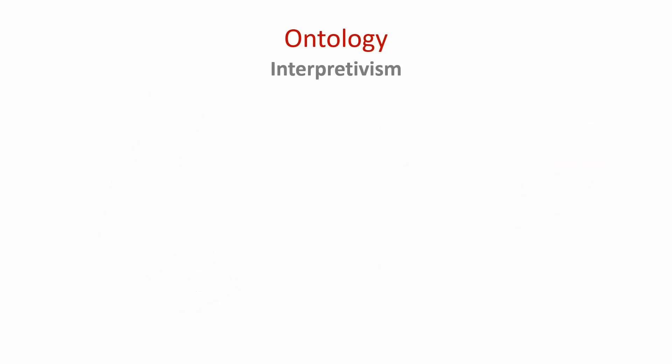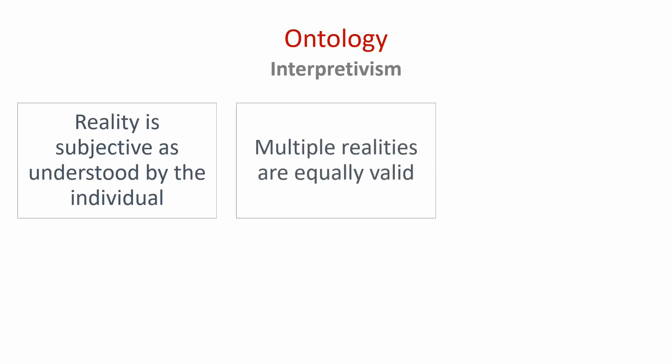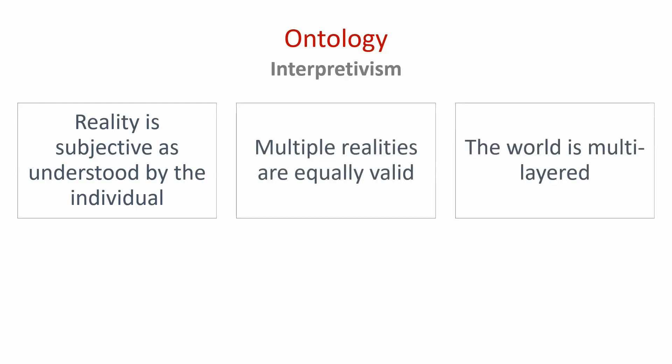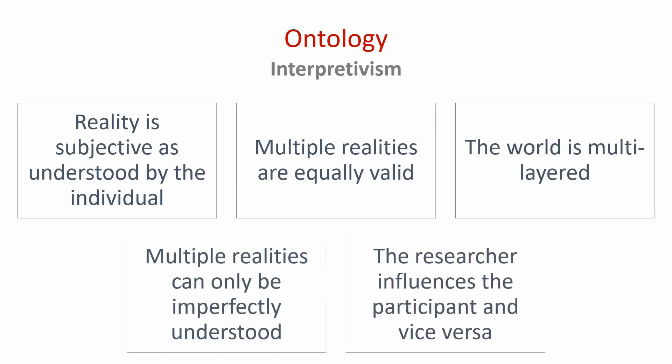So once again, here is a recap of the ontology of interpretivism. Reality is subjective as understood by the individual. Multiple realities are equally valid — the world is multi-layered. Multiple realities can only be imperfectly understood, and the researcher influences the participant and vice versa.